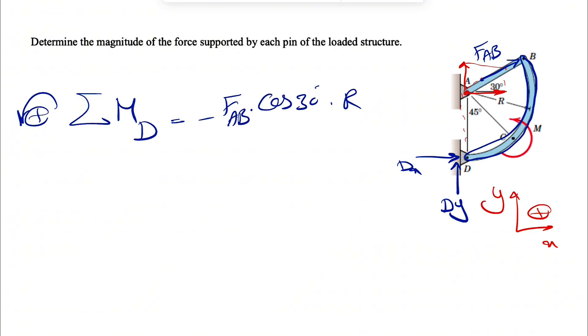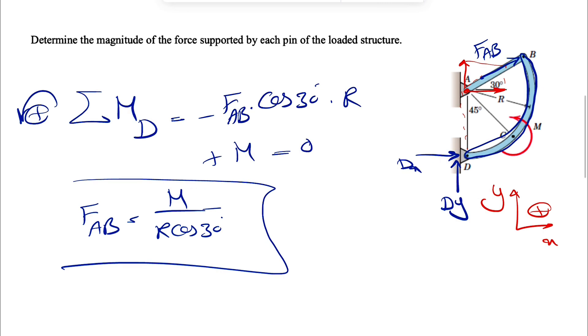That one is in this direction, so the moment is clockwise. We're going to have a negative sign: minus FAB cosine of 30 degrees. The distance is basically what we have for R. We're going to have another moment at point C, which we can see in red. That one's counterclockwise. So plus M equals zero. So our FAB would be M over R cosine of 30 degrees.